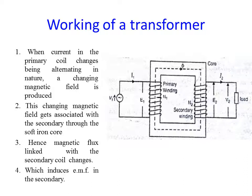When current in the primary coil changes, being alternating in nature, a changing magnetic flux is produced. This changing magnetic flux gets associated with the secondary through the soft iron core. Hence, the magnetic flux linking with the secondary coil changes, which induces an EMF in the secondary. The transformer transfers electric power from one circuit to another without any change in frequency, accomplished by electromagnetic induction, where two electric circuits are mutually inductive.